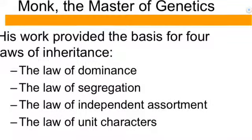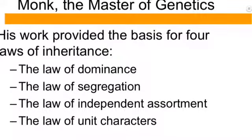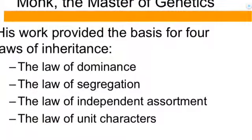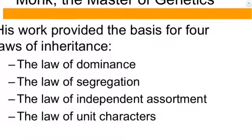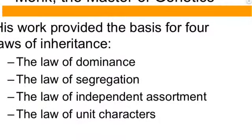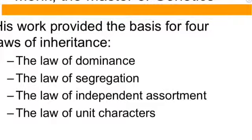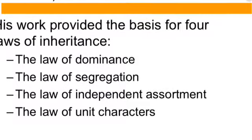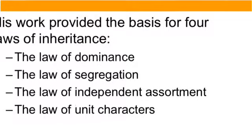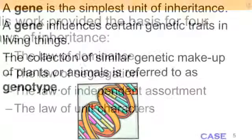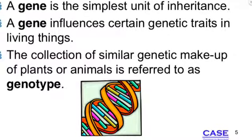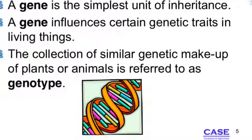Genes are the simplest unit of inheritance. A gene influences certain traits in living things. Genes are why we have the eye color or the hair color that we do. A collection of similar genetic makeup of plants or animals is referred to as a genotype.